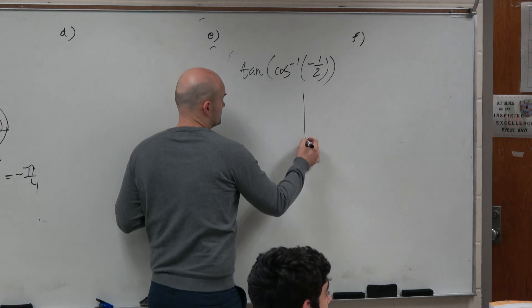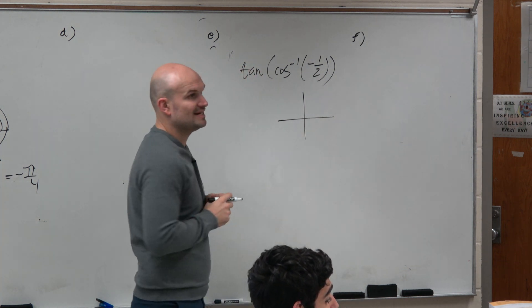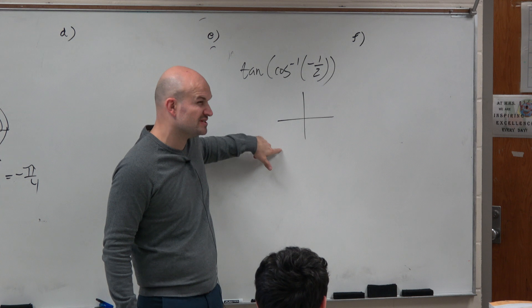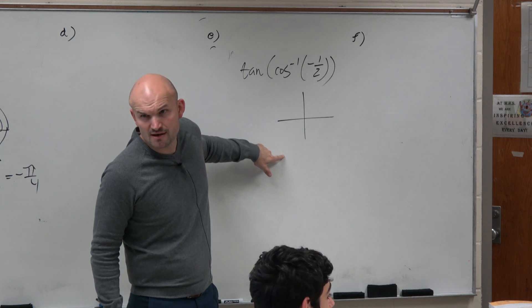Well, when is cosine going to be negative 1 half? Now, thankfully, we know that cosine is negative in the second and the third quadrant. But do we need to consider the third quadrant? No.